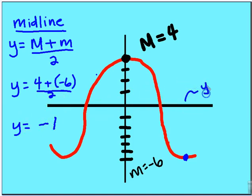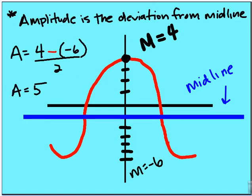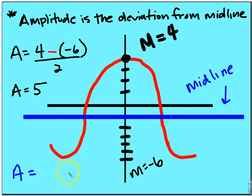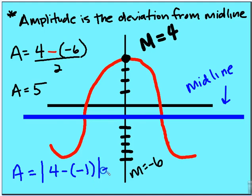The midline is that halfway point between the peak and the trough. We can also find the amplitude as the absolute value of the distance between the peak and the midline. So the amplitude equals the absolute value of 4 minus negative 1, which equals 5.